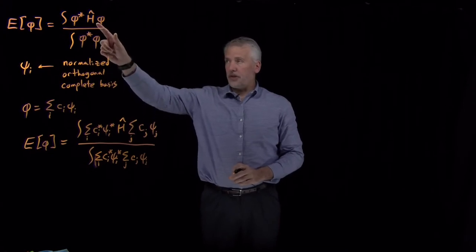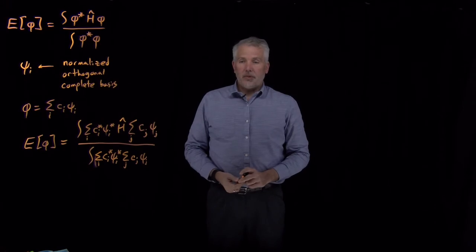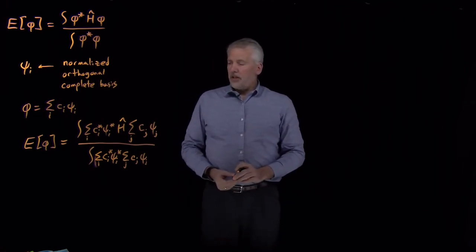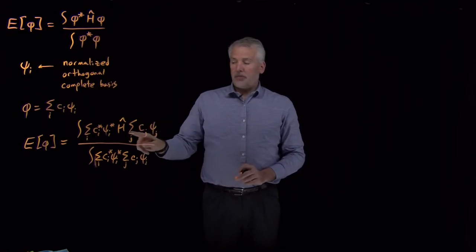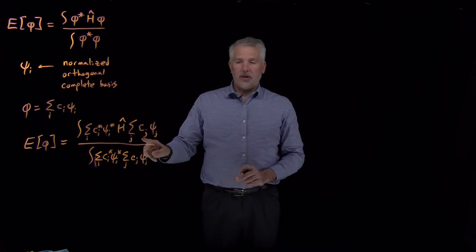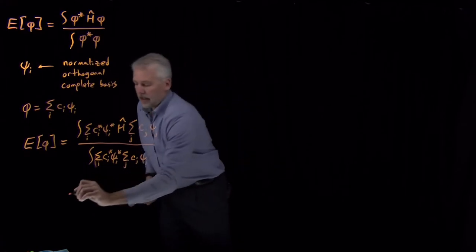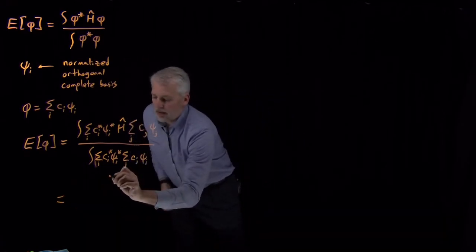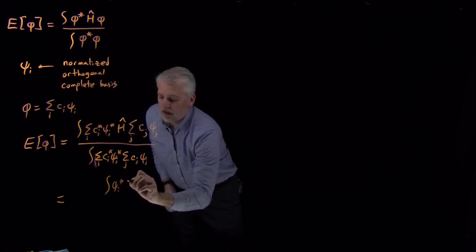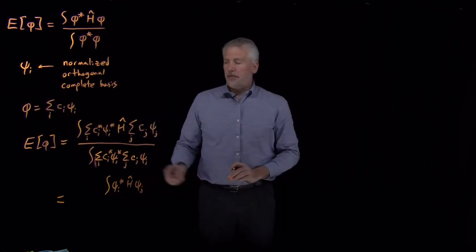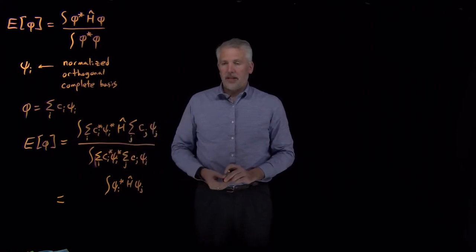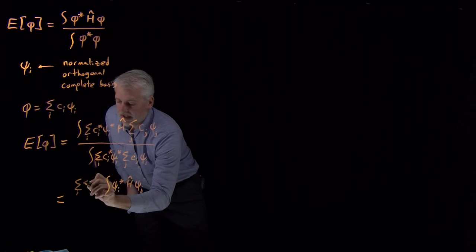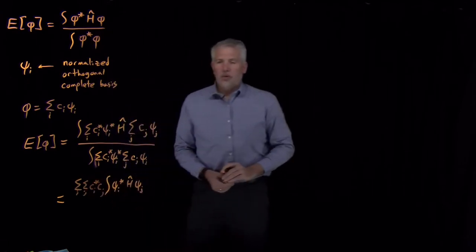I've just replaced the variational trial function with its representation using the correct wave functions. Now, if I look at what I've written, we can rearrange these sums and integrals to some degree, remembering that the Hamiltonian has some derivatives in it, so it's acting on everything that comes after it. I don't have to worry about what that does to the linear coefficient — it's just a constant multiplying the wave function. In the numerator, I only integrate over the things that depend on the variables: r, theta, phi or x, y, z. Outside of the integral, I have a sum over i and a sum over j, and then two coefficients, ci and cj, one of which is complex conjugated.